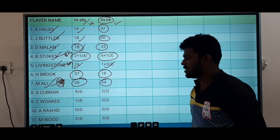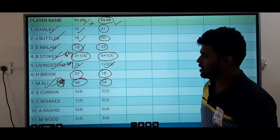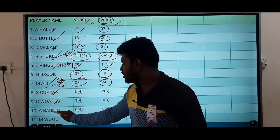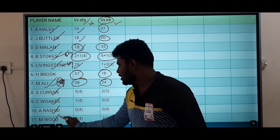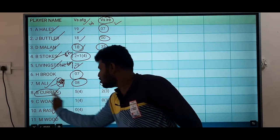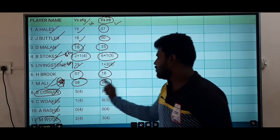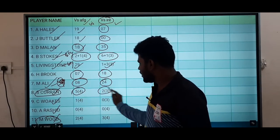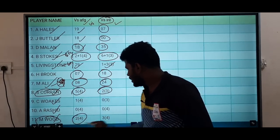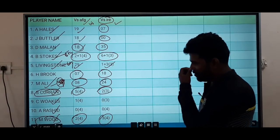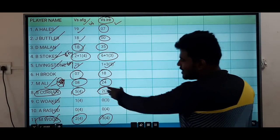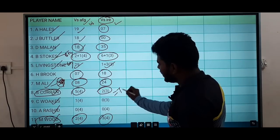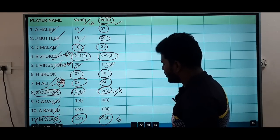The bowling opportunity includes Sam Curran, Chris Woakes, and Rashid. Sam Curran would be relevant in all the matches — 5 wickets and 2 wickets in recent games, 2 wickets and 3 wickets too. In this series Sam Curran has taken 7 wickets and 5 wickets.